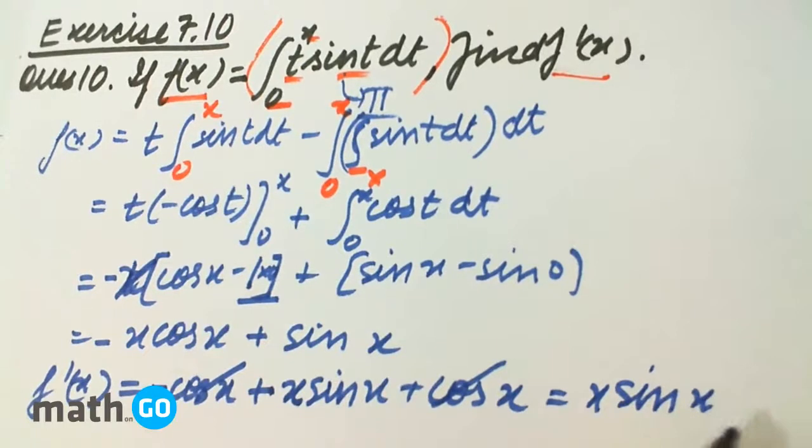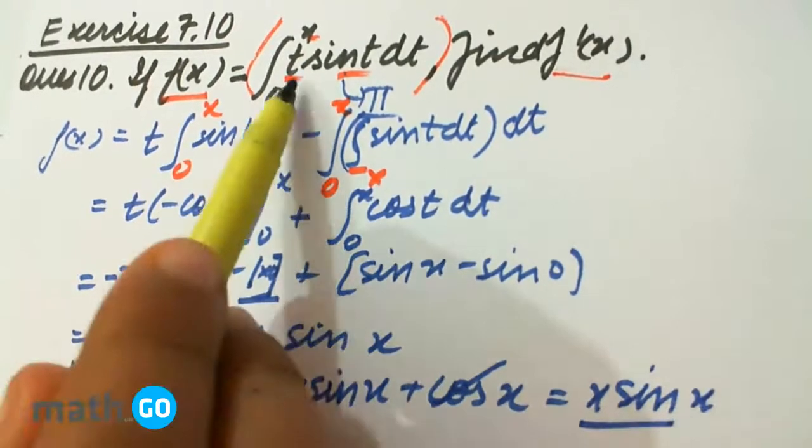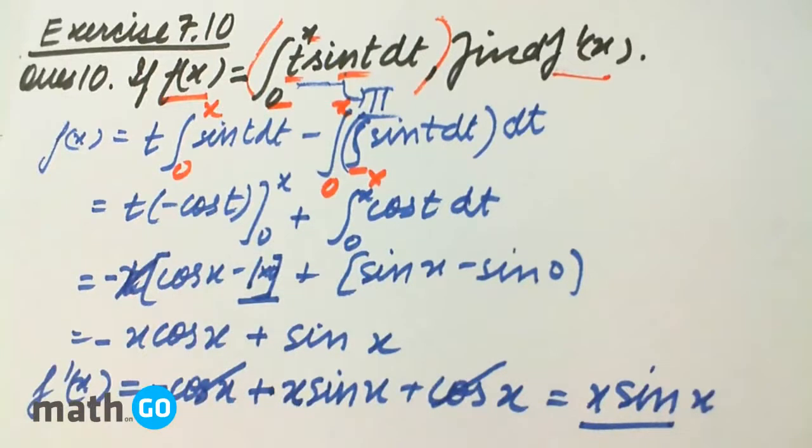This and this function are equal if we put x equals to t, so these functions should be equal.